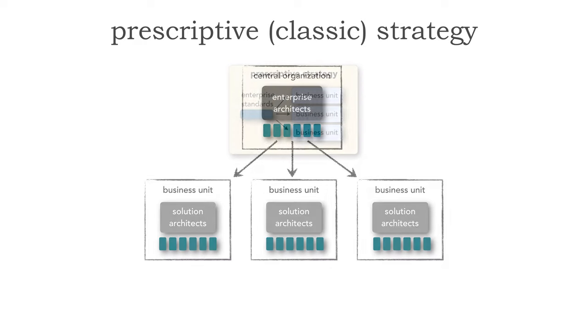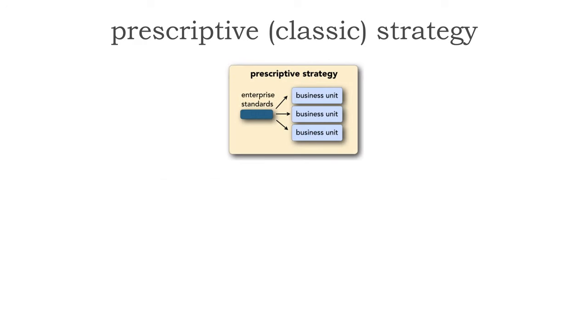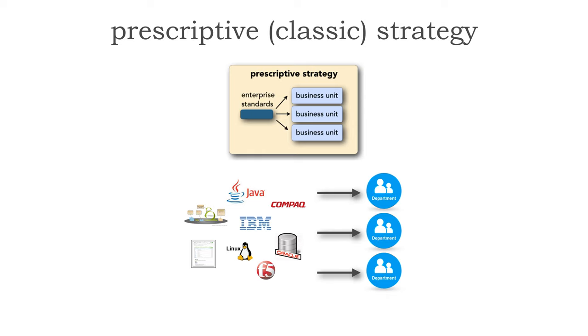Let me show you an example. With the prescriptive strategy, the enterprise architecture team defines these standards: we will be using Oracle for databases, F5s for load balancing, Compaq hardware, embracing IBM along with Java, agile team structures, and a standard way of documenting everything across the entire company. The prescriptive strategy says every department has to adhere to these standards.